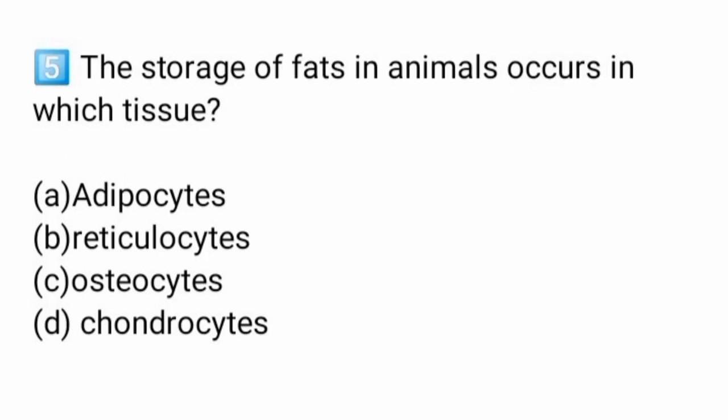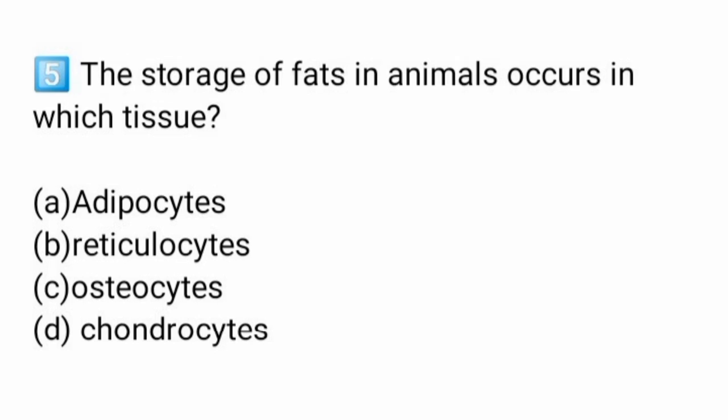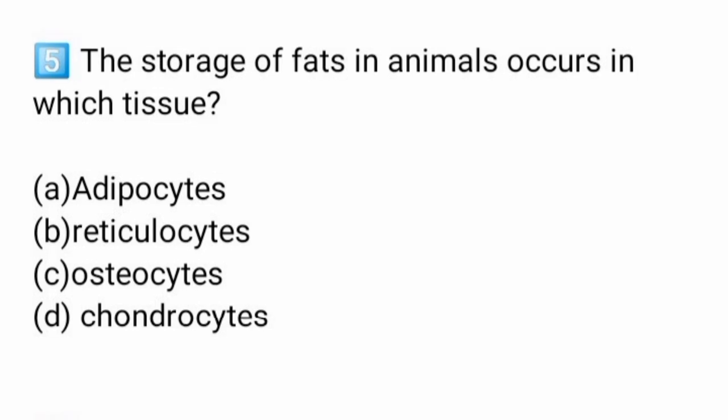The storage of fats in animals occurs in which tissue? The specialized fat cells are called adipocytes. The answer is adipocytes, option A. In the human body and animals, fat is stored in adipocytes.